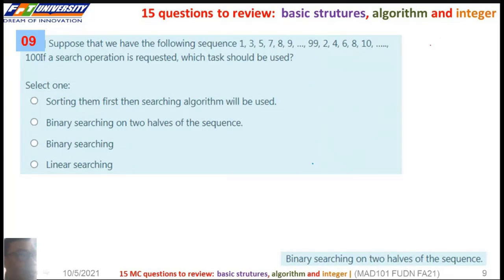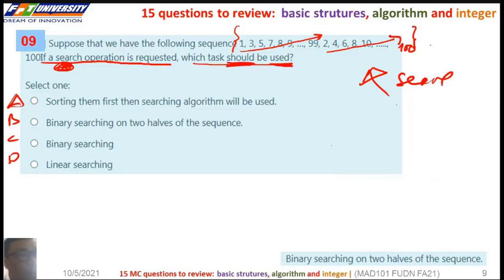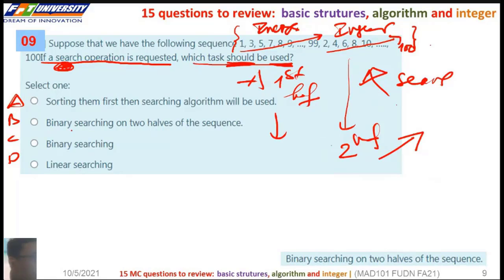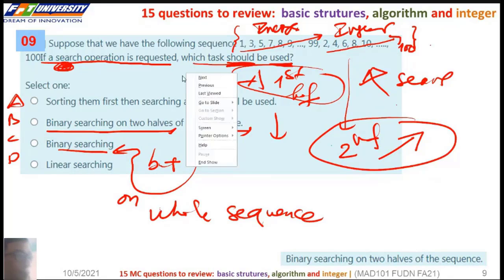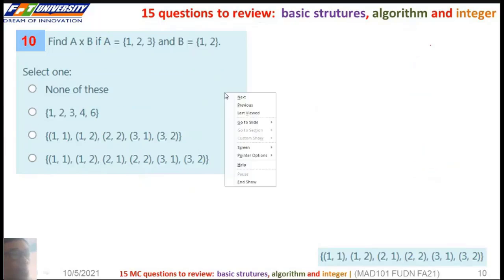So the next, the sequence is increasing in here and in here. If a search operation is requested, which task should be used? Because it is increasing order in the first half and in the second half, binary search on two halves of the sequence. But we cannot execute binary search on the whole sequence.